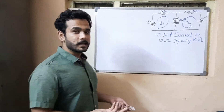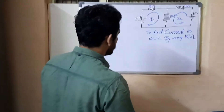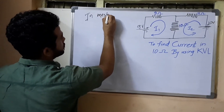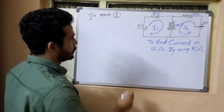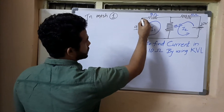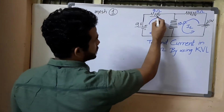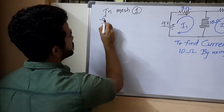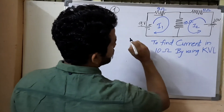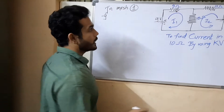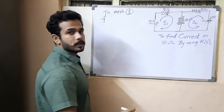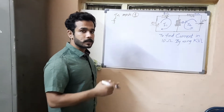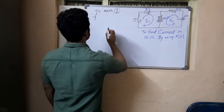In mesh 1, the current is flowing in one direction but we are tracing the circuit in the opposite direction. Here, at the battery side there will be a voltage drop, and at the 10-ohm resistance there will be a voltage gain, because we are tracing opposite to the given direction of current. So there will be a current gain — plus sign for the resistance.